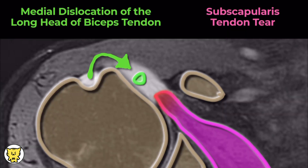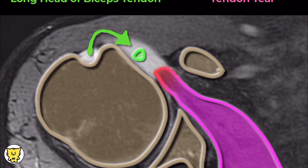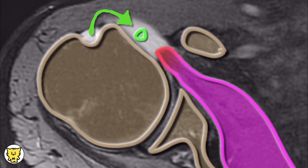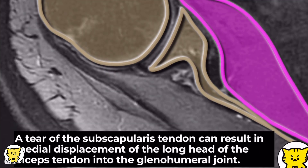Intraarticular dislocation of the biceps tendon typically occurs when there is a full thickness tear involving both the coracohumeral and superior glenohumeral ligaments, concurrent with a full thickness tear of the superior subscapularis tendon fibers.